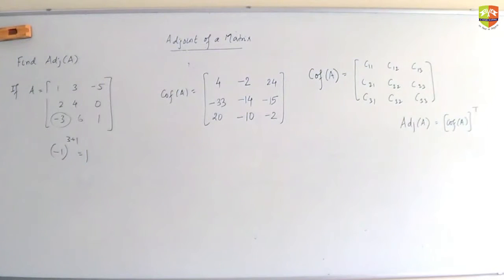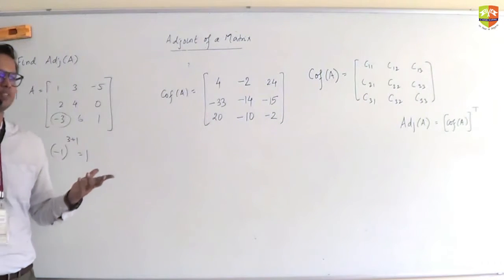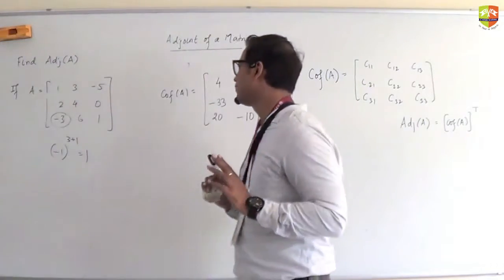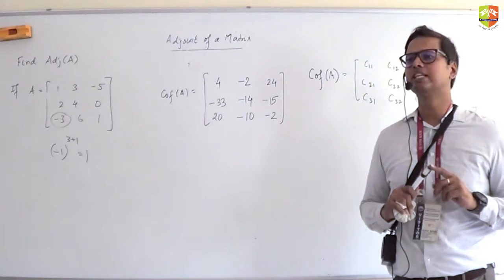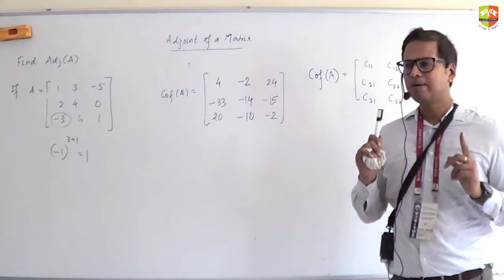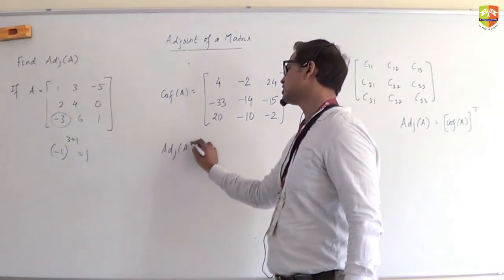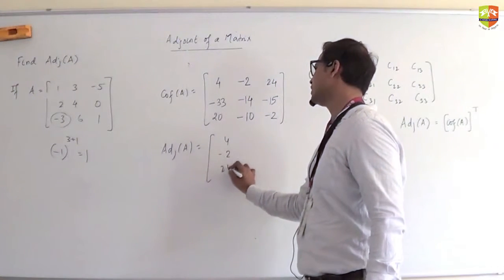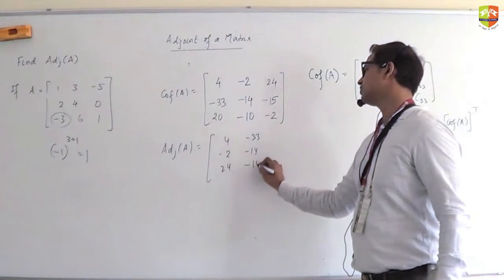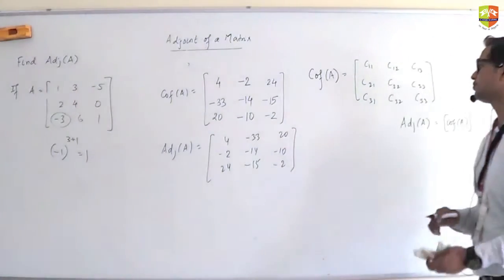Then for 6, it will be minus sign. Hide this, hide this. 1 times 0 minus 2 times -5, which is 0 plus 10 equals 10. Minus sign makes it -10. For the last element 1, it's plus sign. 1 times 4 minus 2 times 3, which is 4 minus 6 equals -2. The adjoint will be the transpose of this cofactor matrix: 4, -33, 20, -2, -14, -10, 24, -15, -2.